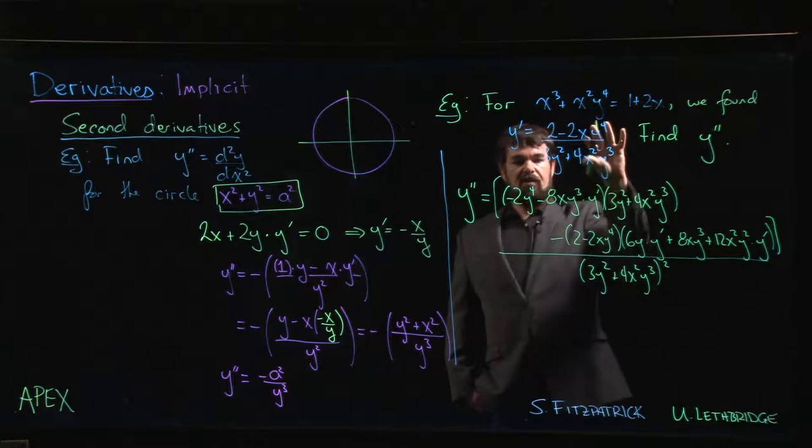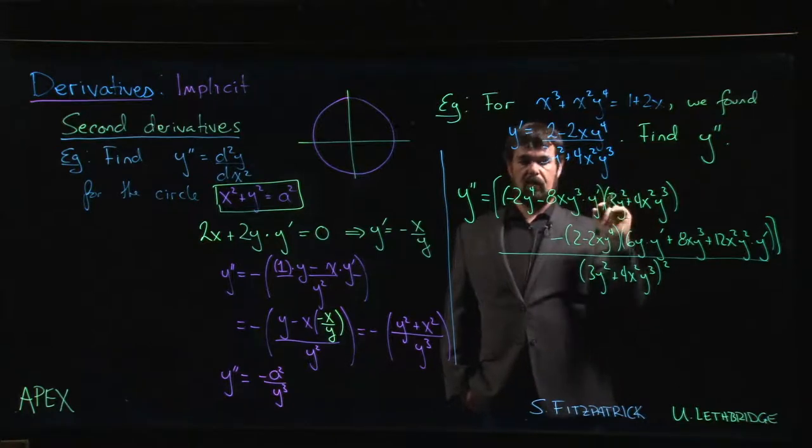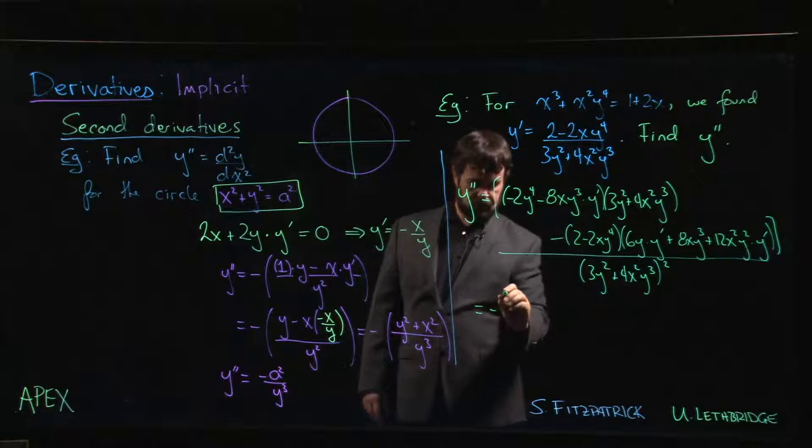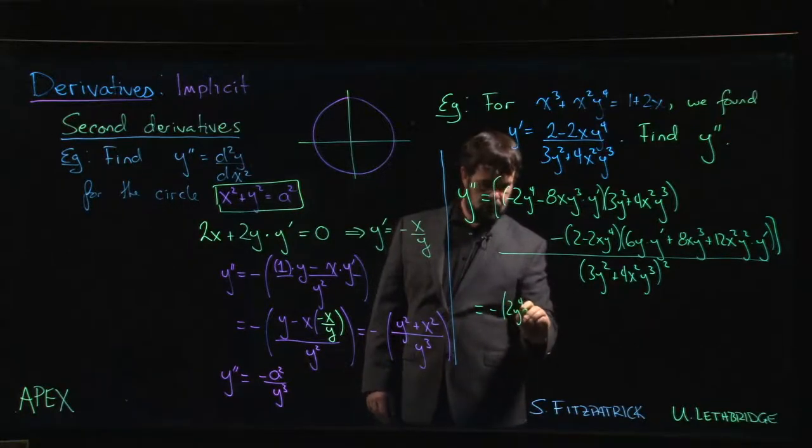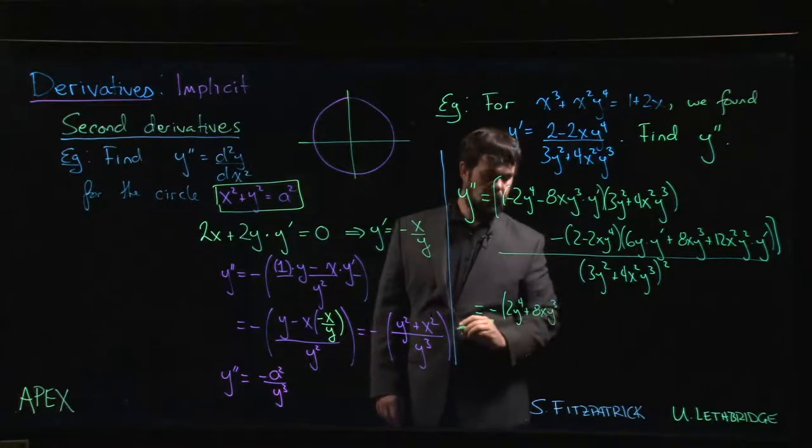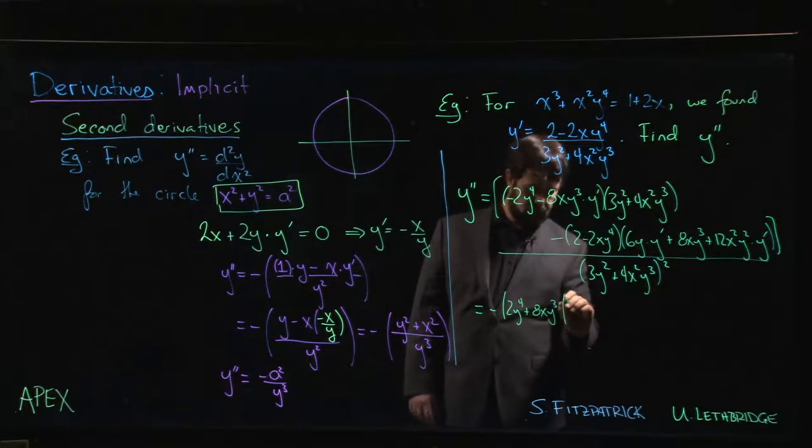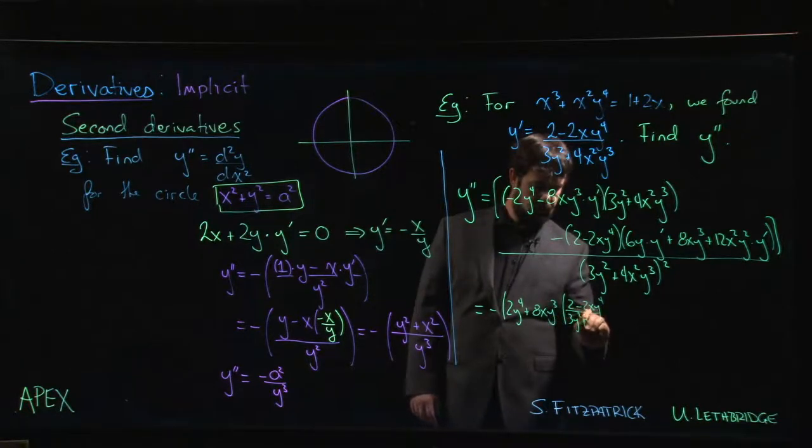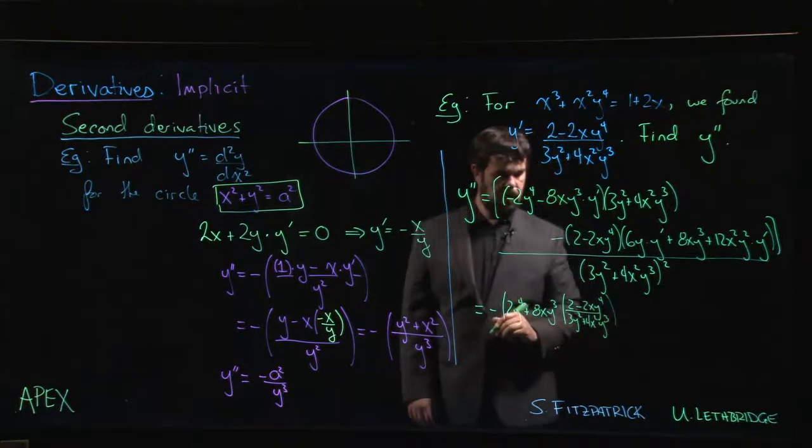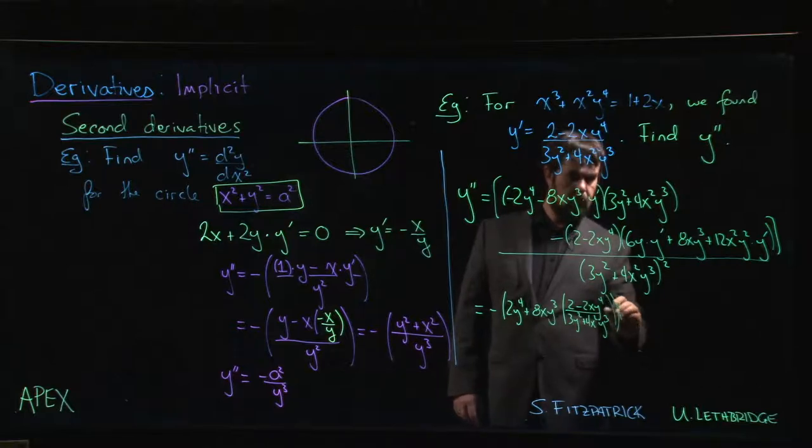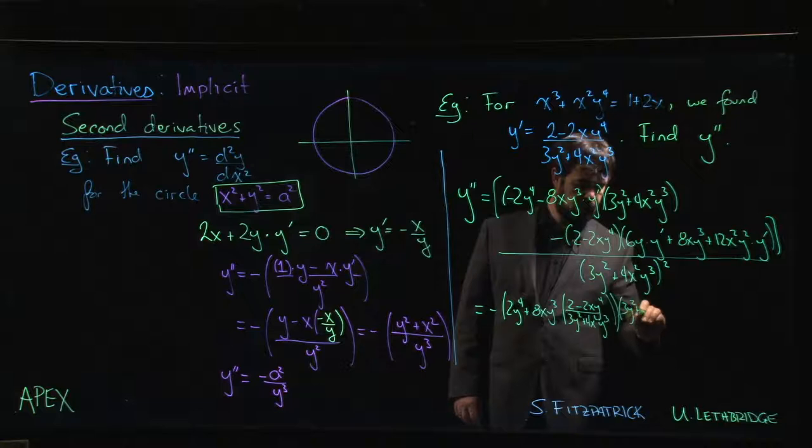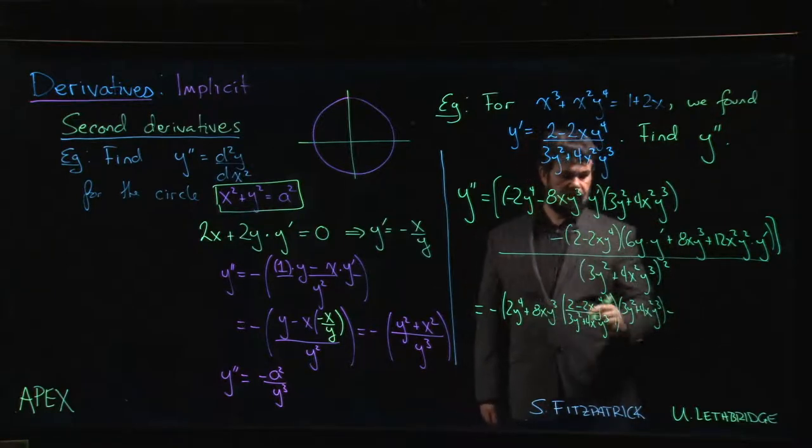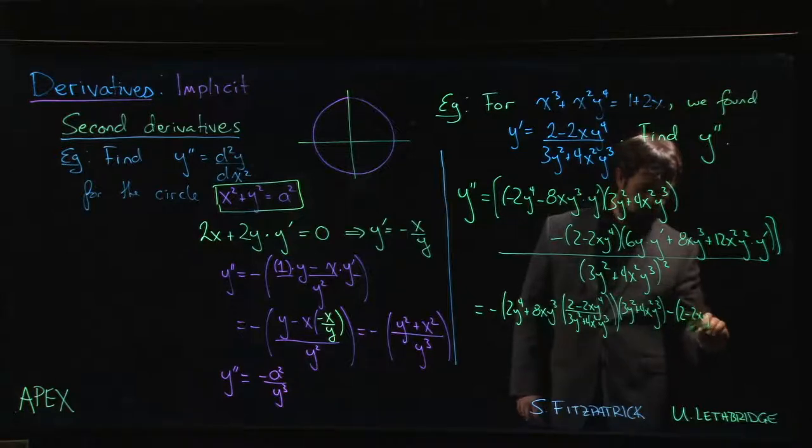But you're still not done because you don't want to leave these y prime terms in your answer. You want to try to write everything just in terms of x and y. So there's still a substitution to do. We still have to come up here and say, okay, what do we have? We can bring this minus sign. Two y to the fourth plus eight x y cubed times two minus two x y to the fourth over three y squared plus four x squared y cubed. Close that off, multiply by the denominator, three y squared plus four x squared y cubed.